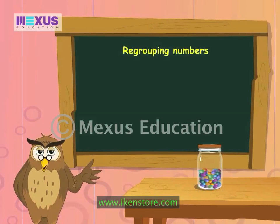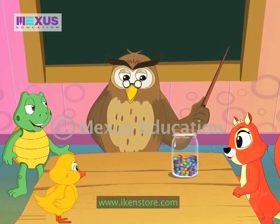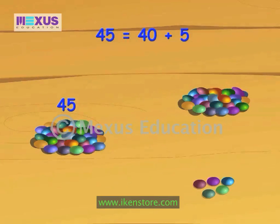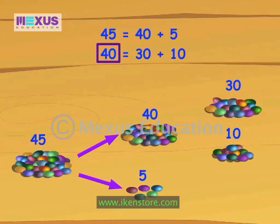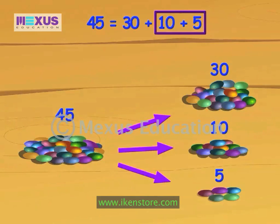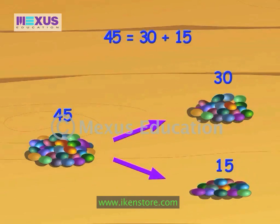All of you, please come here to my table. There are 45 candies in this jar. Let me take them out. Let's divide them into two parts — one part with five candies and the other part with 40 candies. Now we know 40 equals 30 plus 10. So now we divide 40 into two parts of 10 and 30. Now we can join these two groups. So we have grouped 45 into 30 plus 15.